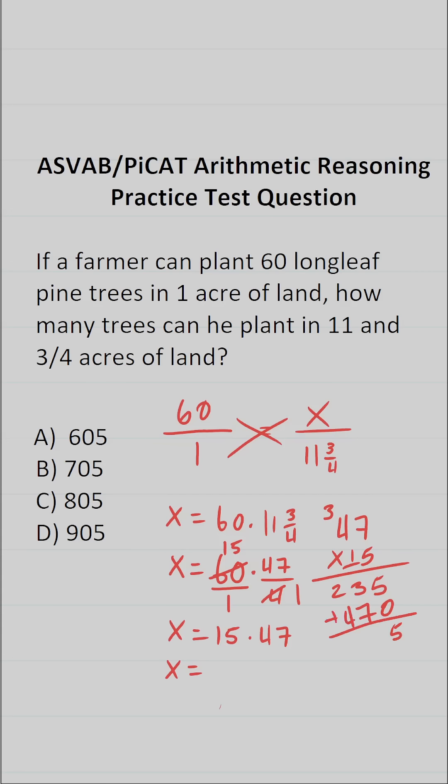This is 5. 7 plus 3 is 10, so bring down a zero, carry a 1. Then 4, 5, 6, 7.